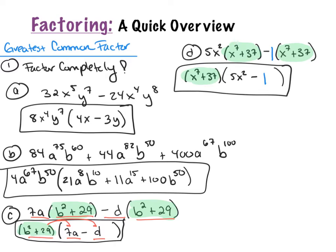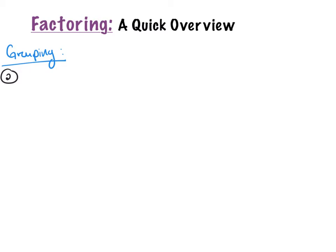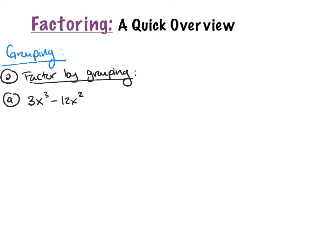Let's go on to factoring by grouping. When we factor by grouping, we're going to always have an even number of terms. Let's do the first one: 3x cubed minus 12x squared plus 4x squared plus 5x minus 20. Notice here we have 4 terms. Whenever you factor by grouping, you always have to have 4, 6, 8, 10, etc. terms — an even number — because we're going to pair them up.